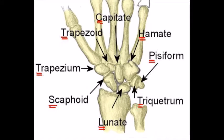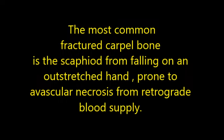Wrist bones on the bottom row from pinky to thumb are: Pisiform, Triquetrum, Lunate, Scaphoid, and Trapezium. Top row from pinky to thumb — we cannot avoid: There's Hamate, Capitate, and Trapezoid.